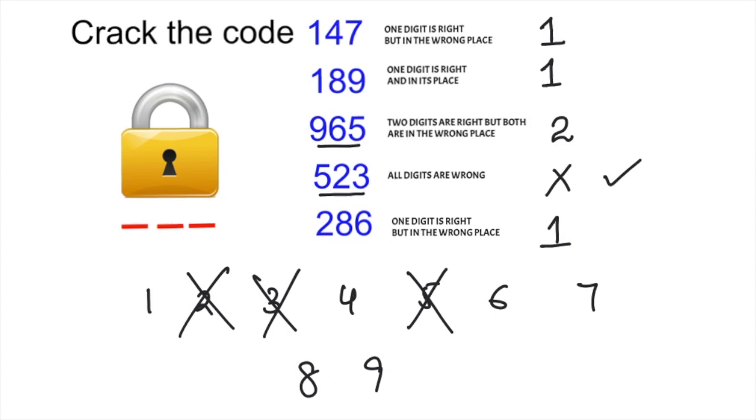Now we can check 965. Two digits are correct. If two digits are correct, 965, 5 is already not correct. So that means 9 and 6 are the original numbers, but they are in the wrong place. They should be on different places. They can't be on these places.